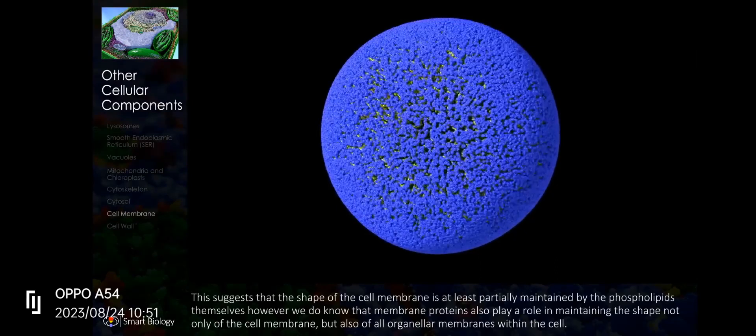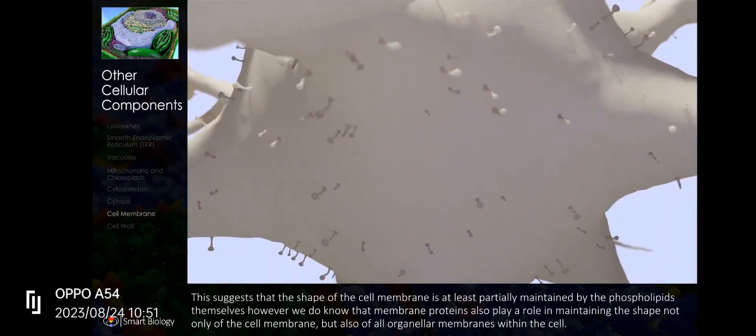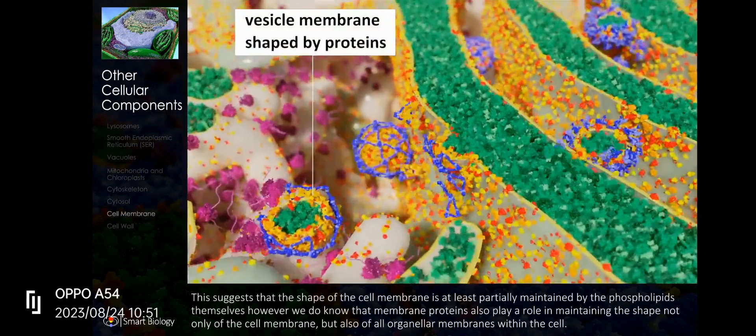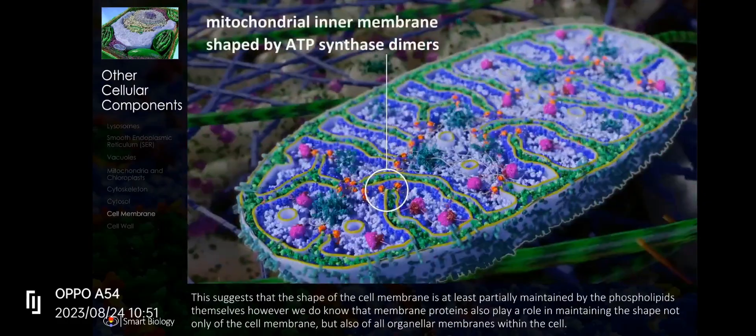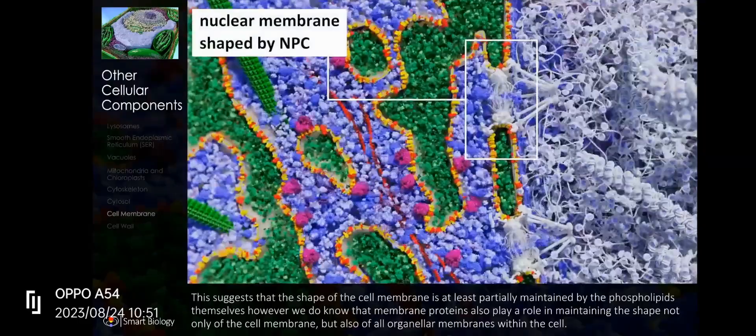This suggests that the shape of the cell membrane is at least partially maintained by the phospholipids themselves. However, we do know that membrane proteins also play a role in maintaining the shape not only of the cell membrane but also of all organellar membranes within the cell.